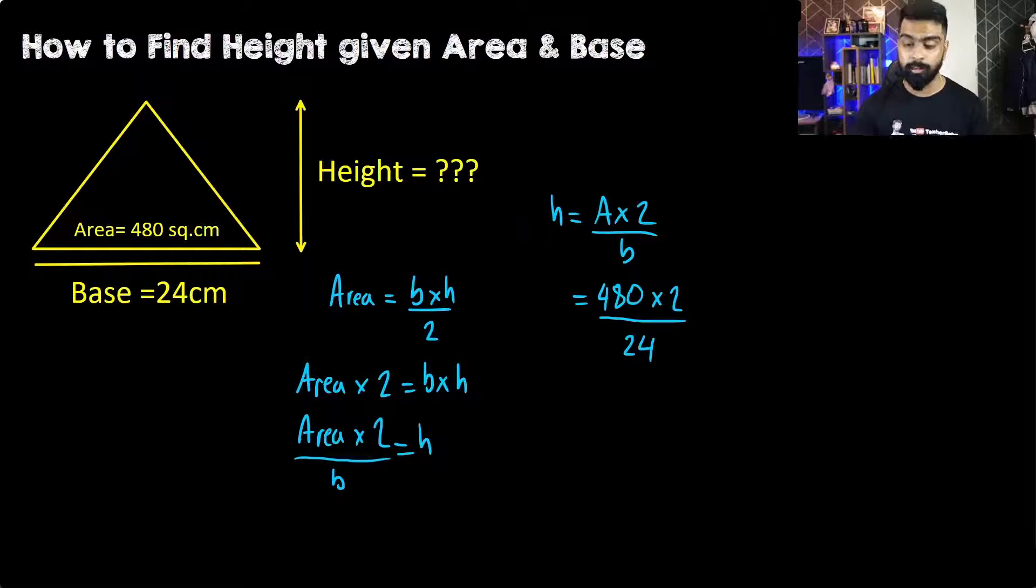24 and 480 can simplify. First, 2 will change to 1 and 24 will change to 12. Then 480 divided by 12 gives us 40 centimeters. So in this question, the height will be 40 centimeters. Now let's do one more question.